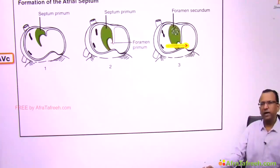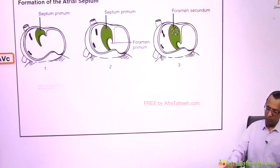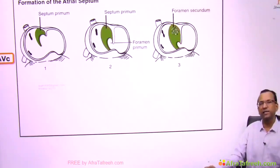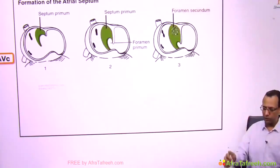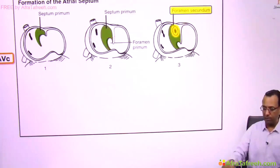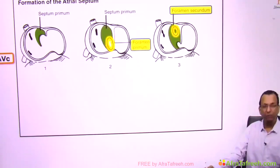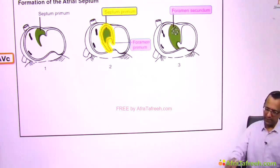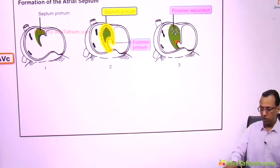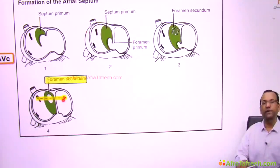But there is another problem: you have to send blood of the right atrium to the left atrium, but this septum is going to fuse. So this foramen primum is going to become narrow and disappear. You need one more foramen — that is the second foramen, called foramen secundum. So foramen primum disappears and foramen secundum appears for passage of blood. Both foramen primum and foramen secundum are in the same septum — the septum primum. Now you are using foramen secundum to send blood from right to left atrium.